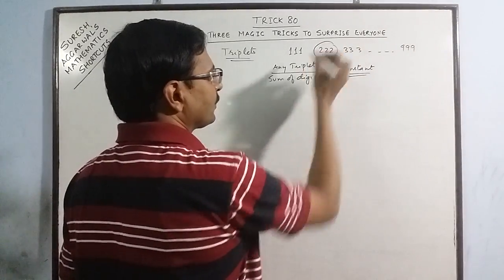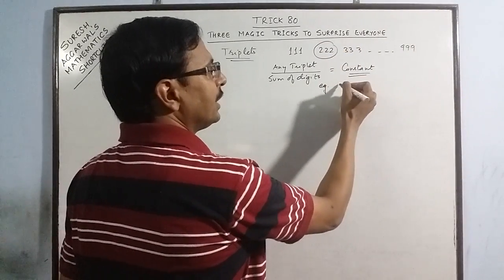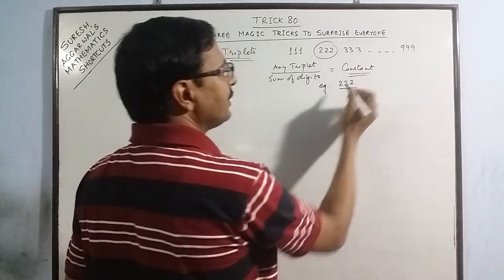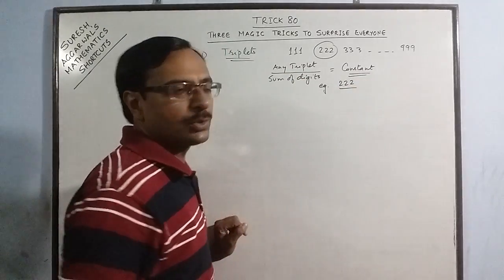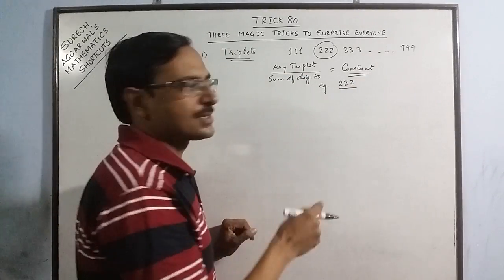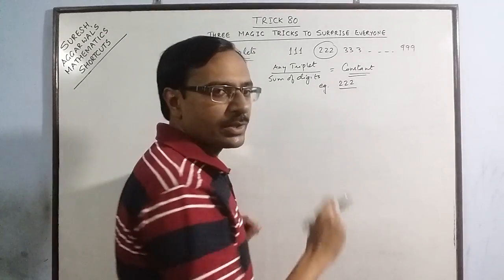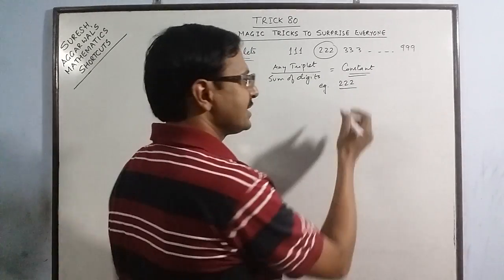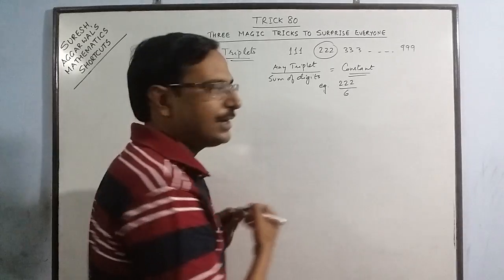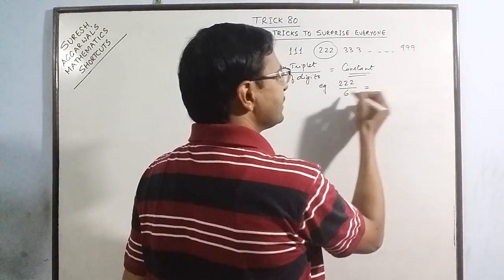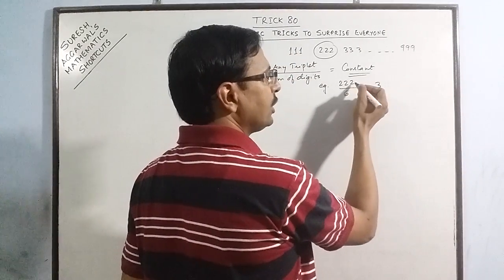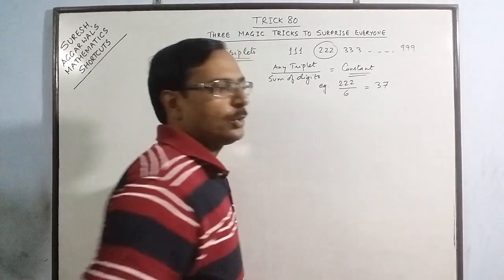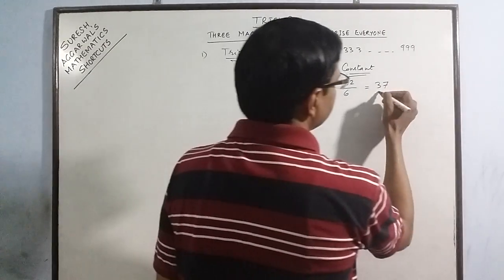Let's take triple two. Now triple two divided by—I have taken triple two, now I have to divide it by sum of digits. So the digits are 2, 2 and 2. The sum of 2, 2 and 2 is 6. So if you divide 222 by 6: 6 times 3 is 18, 42, 6 times 7 is 42. So you get the answer as 37.